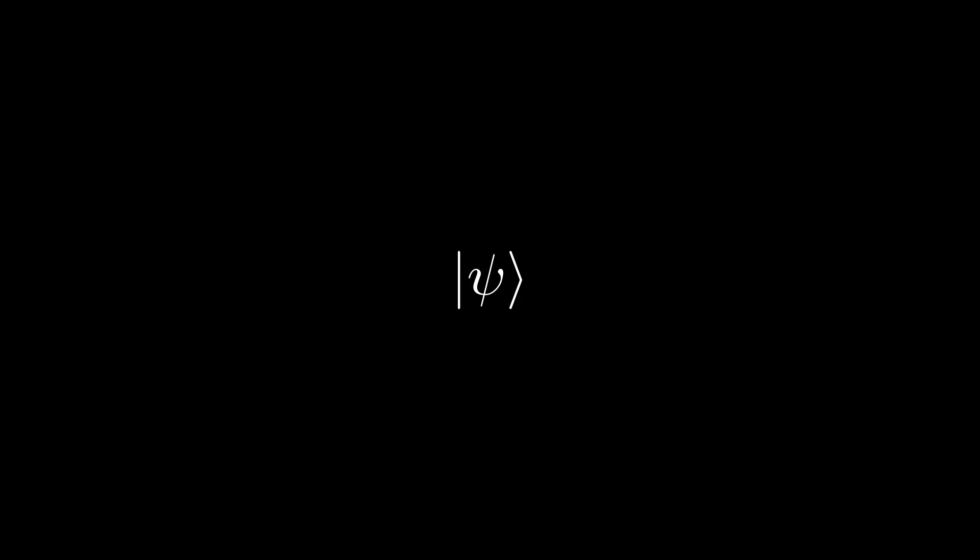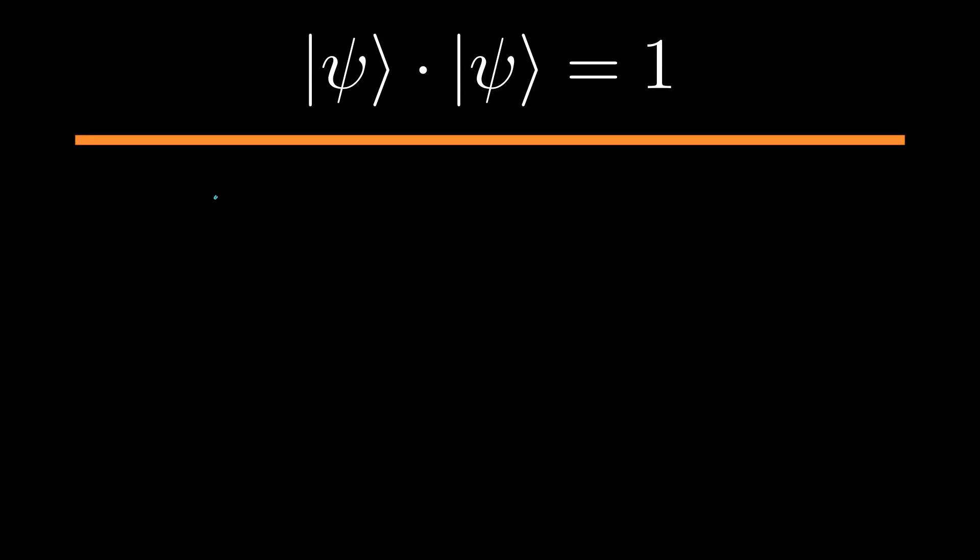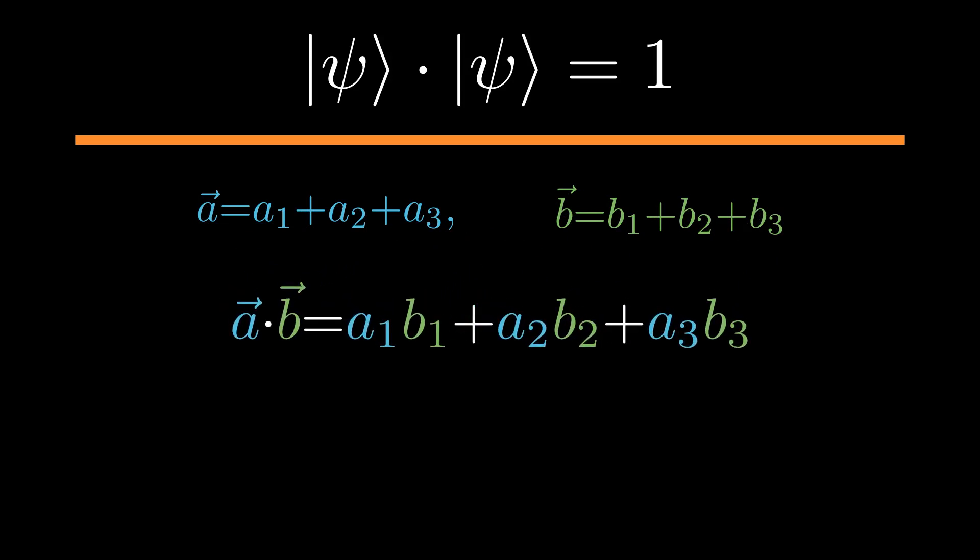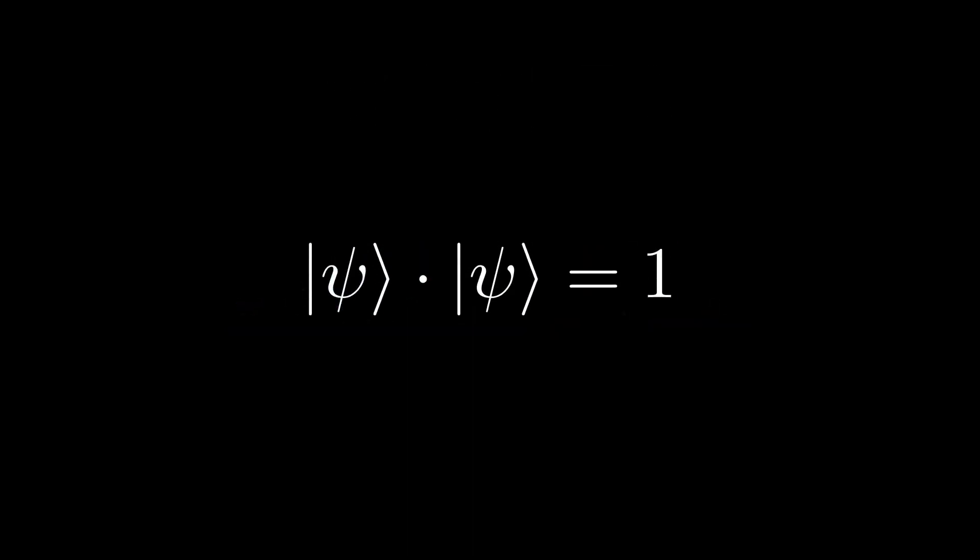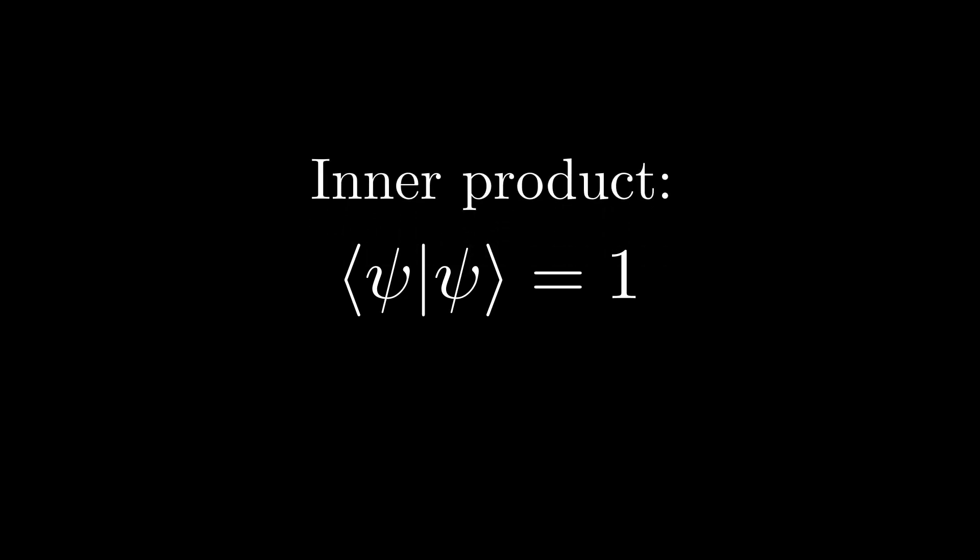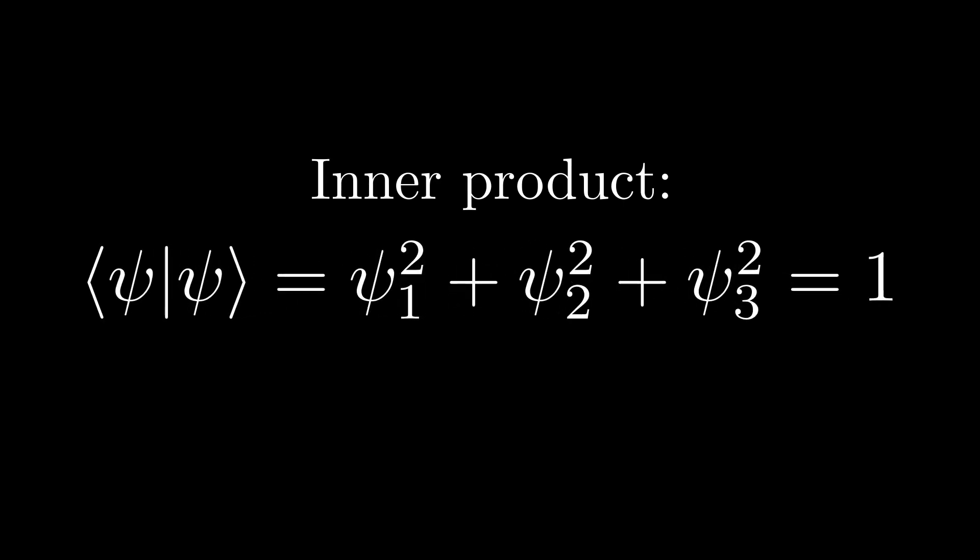Now how would we write down the normalization condition in this vector notation? We just decided that the length of the vector must equal 1, so if we take the dot product of psi with itself it should equal 1. You might be familiar with the dot product from linear algebra, where if we have two vectors a and b, the dot product a times b is given by multiplying all vector components of a with the corresponding vector components of b like this. The same is true for vectors in Hilbert space. Here we just write the dot product not with a dot, but with a combination of a bra and a ket vector. You can also call this the inner product of these vectors. The normalization condition of psi may then be written like this.